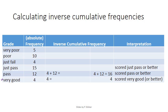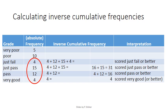The next one is just-pass or better. That's 4 plus 12 plus 15, but notice that 4 plus 12 was already calculated as 16. So we can use this 16 and simply add the frequency of just-pass, which is 15. So 16 plus 15 equals 31. Scored just-fail or better is the sum of these students, and all of this is also in here.